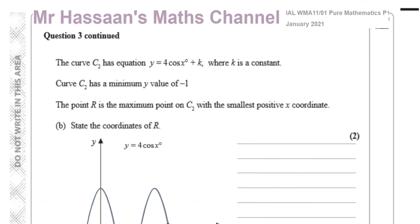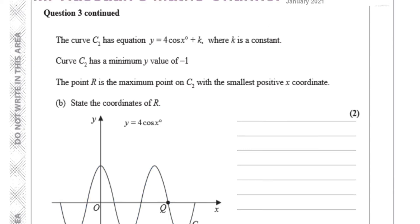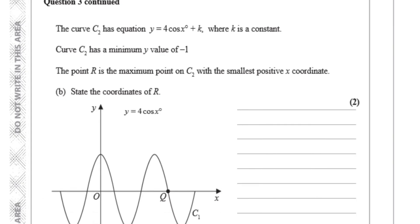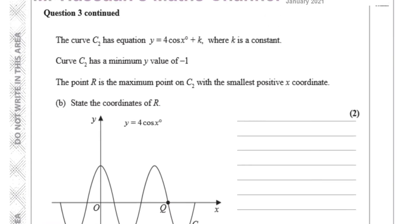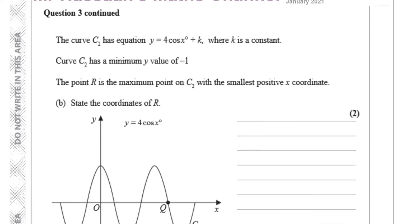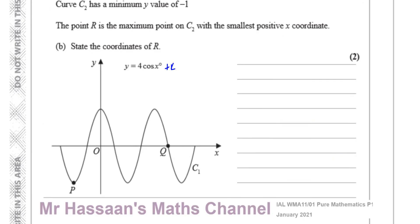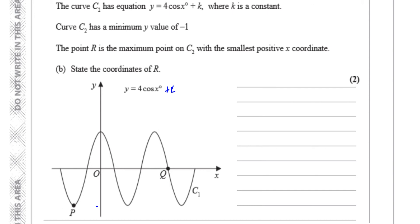Now for part 3B: the curve C2 has equation y equals 4 cosine x plus k, where k is a constant. The curve C2 has a minimum y value of minus 1. The minimum value of this curve right now is minus 4, and the minimum value of C2 has to be minus 1.